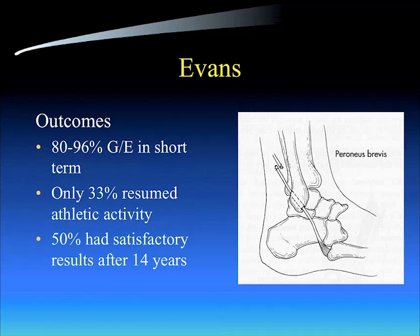When you look at outcomes from the 1980s and early '90s regarding the Evans procedure, there was about an 80% to 96% good and excellent outcome in the short term. However, only 33% of individuals resumed athletic activity, and only 50% had satisfactory results after 14 years — not a very good outcome for this particular procedure.